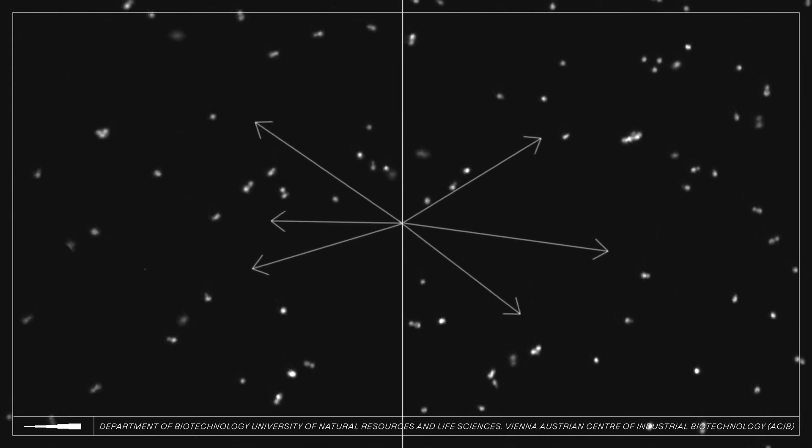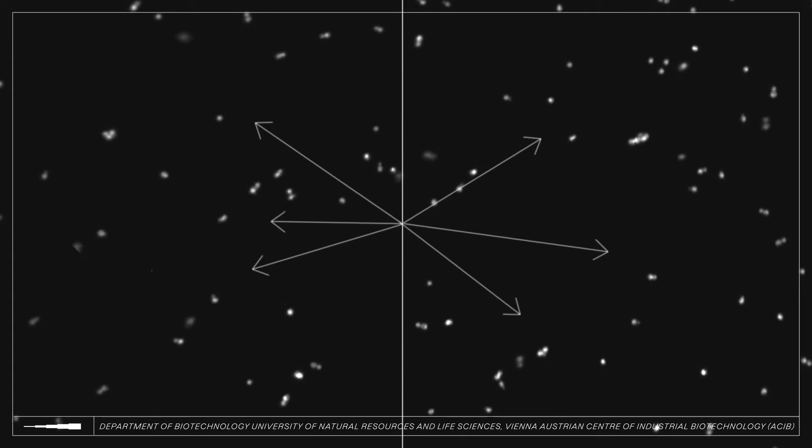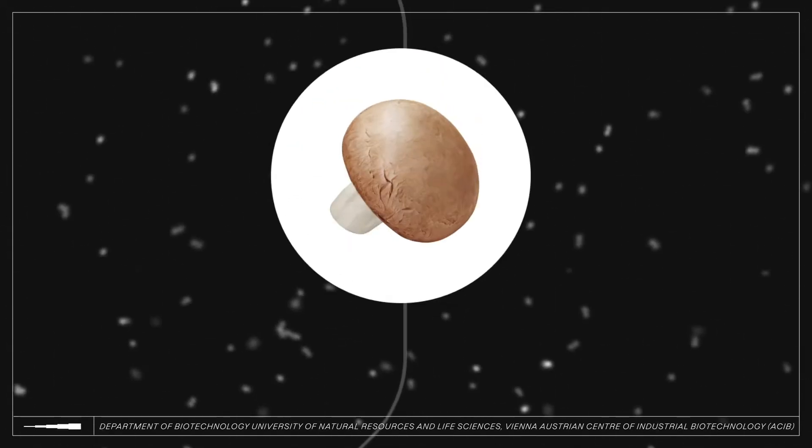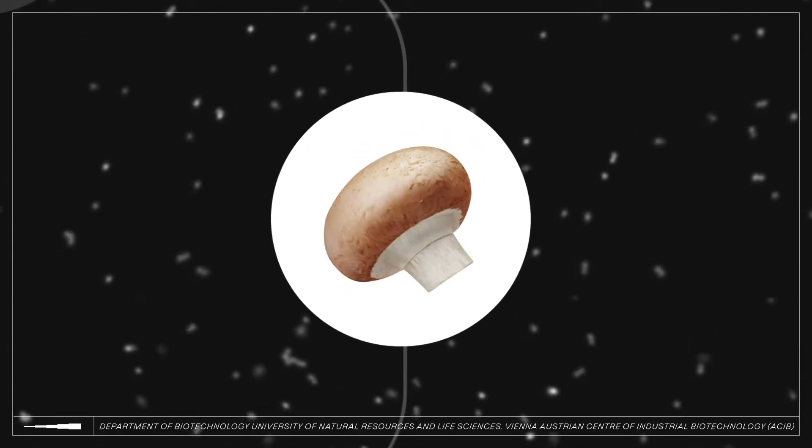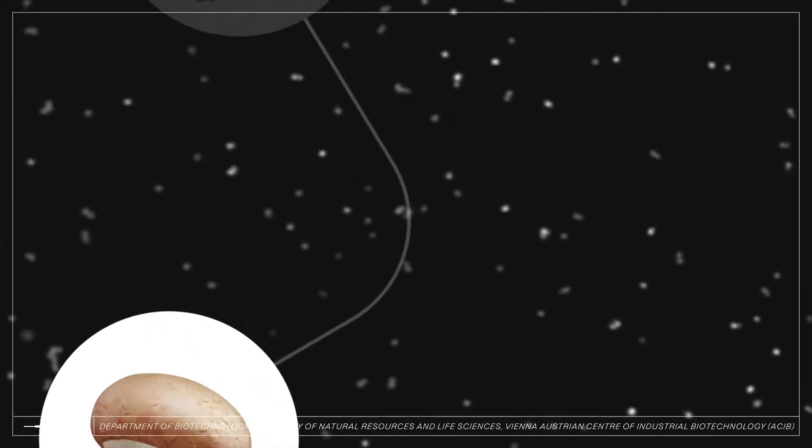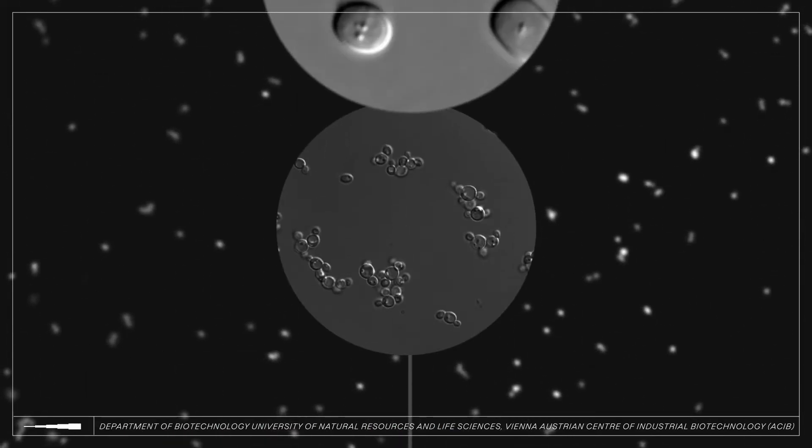What you see here is yeast. Like a mushroom, it is a sugar-craving fungus, but much smaller. In fact, unlike a mushroom, it is made up of only one single cell, and thousands of them can fit on the top of a needle.